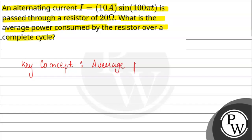We have an alternating current with value I = 10 sin(100πt).